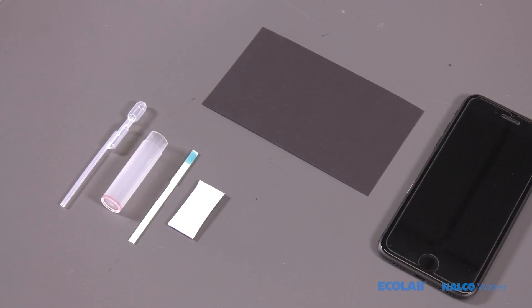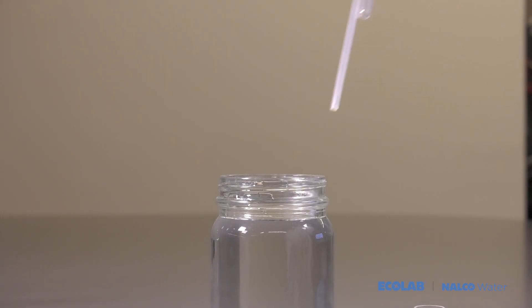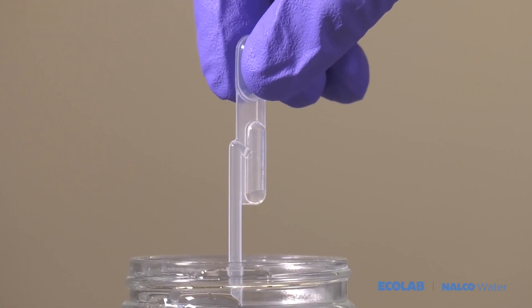We'll now go over a few quick and easy steps on how to run a test. Add the water sample to the test vial using the pipette, one squeeze.